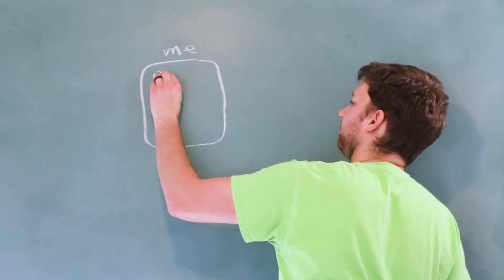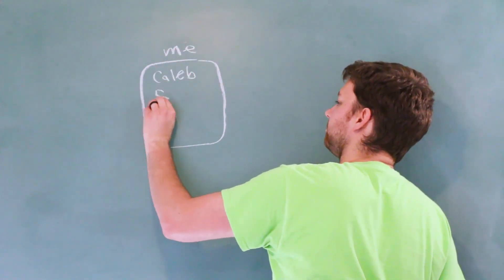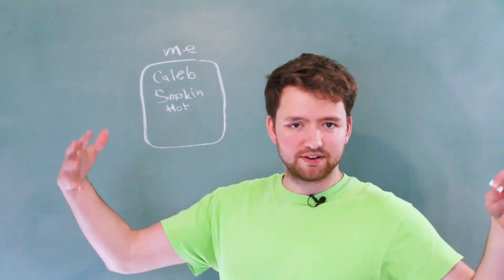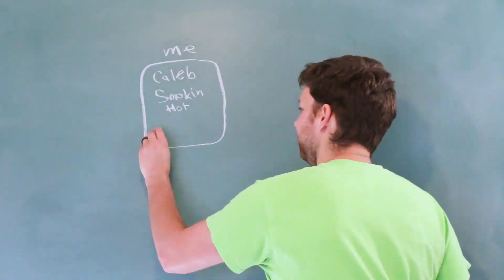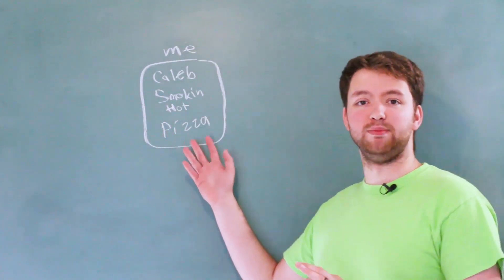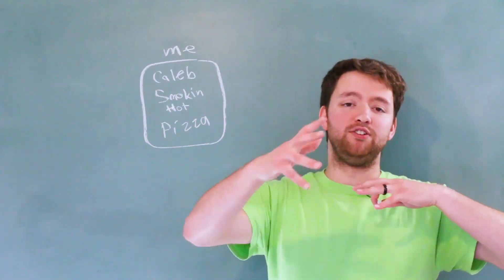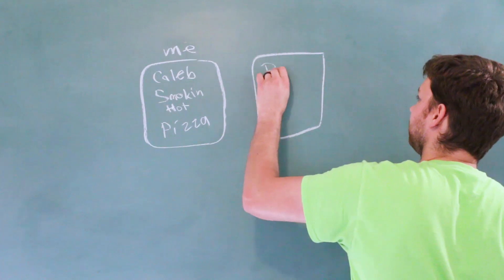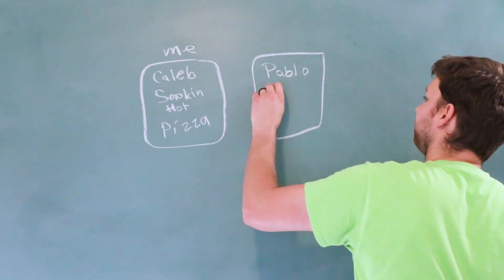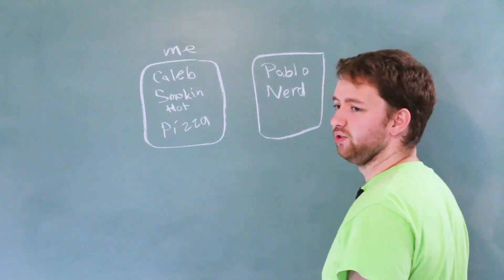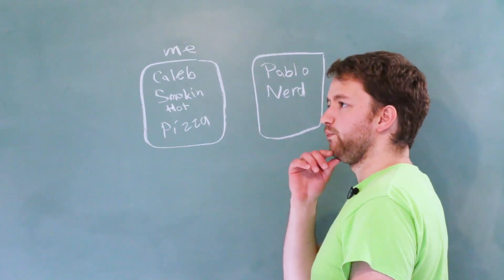So, let's say this is an object that describes me. We might have a name of Caleb, an attribute of Smokin' Hot, and his favorite food, of course, is the one and only pizza. Alright, so this describes me. Now, we might have another object that describes you. So, maybe your name is Pablo, and you're super nerdy, and you like cheese.